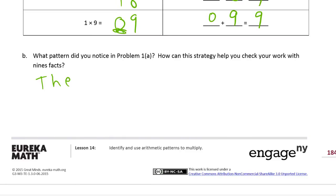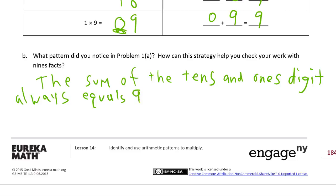So the sum of the 10's and 1's digit always equals 9. And how can this strategy help you check your work with 9's facts?